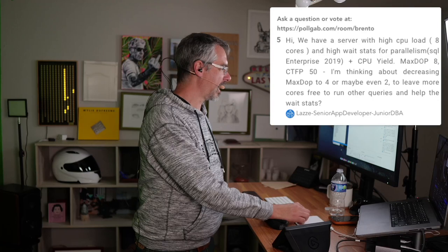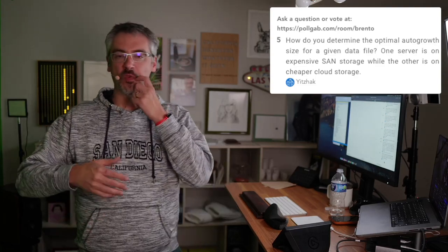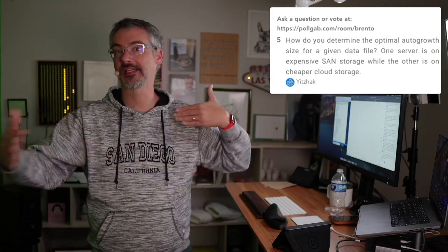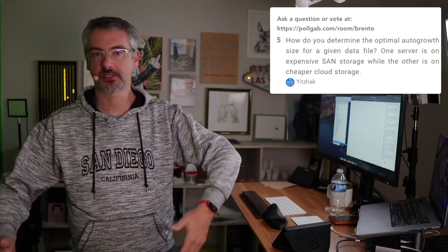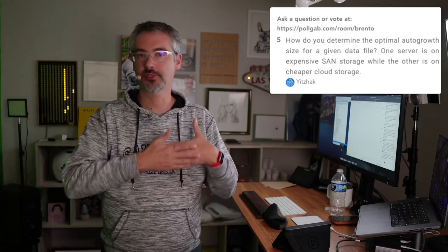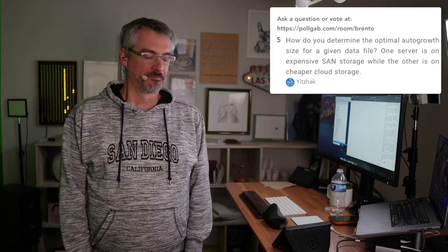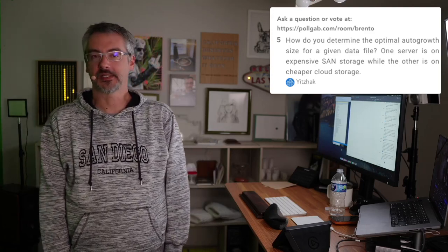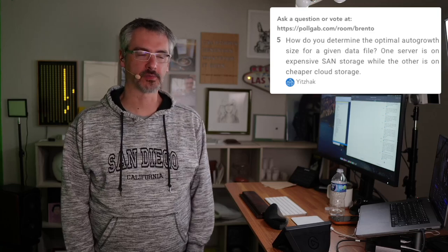Yitzhak asks: how do you determine the optimal auto growth size for a given data file? What's the longest your users will wait during a transaction? For me, I don't have to worry about that at all for data files, because with instant file initialization it can jump to any given data size instantly. I'm fine with four gigabytes as a size on normal databases — just jump it out by a lot so that I don't have to worry about it again for a while. If you have a whole bunch of really tiny databases — like if you're a SaaS provider where every client is in its own database — that's different. But for most modern normal databases, four gigabytes is a completely fine auto growth size. I could imagine going down to one gig, but four gigs is usually the smallest I would go.